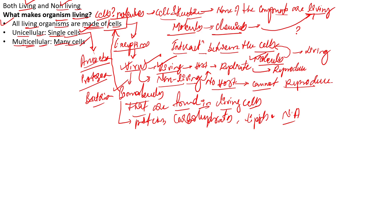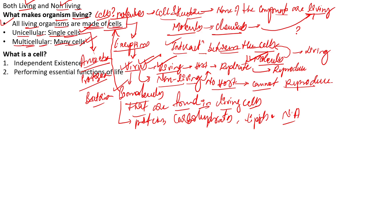To summarize: what makes an organism living is mainly the interaction between cells, which is brought about by the molecules present inside the cells. If we call any organism living, it is made up of cells — exceptions include viruses. Unicellular organisms are made up of single cells, and multicellular organisms are made up of multiple cells. Now let us look at another concept: what do we mean by cell?